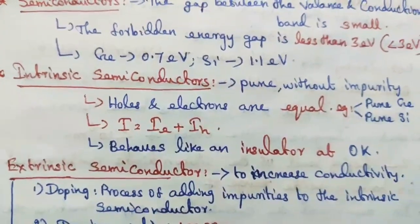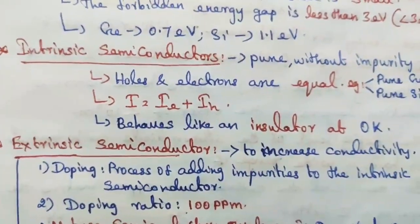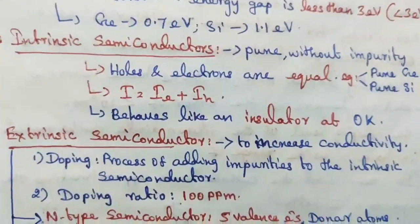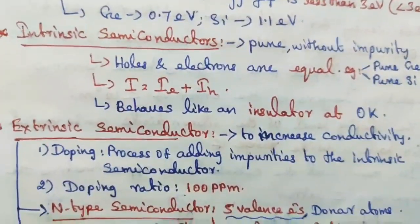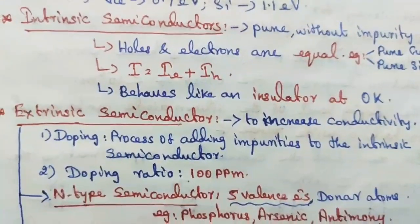Extrinsic semiconductors increase conductivity. The process is doping, which is the process of adding impurities to the intrinsic semiconductor. The doping ratio is 100 ppm, parts per million.